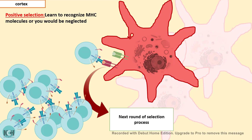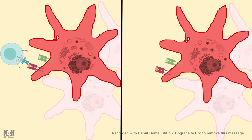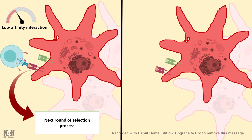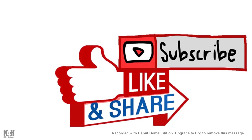If T cells cannot recognize MHC, they are of no use and it is better that they die. But the cells which recognize MHC — whether class I or class II — survive and go to the next screening process: negative selection. In negative selection, cells that interact with MHC-bound peptide antigens with moderate or low affinity proceed to the next round. However, if they interact with MHC-bound peptides with very high affinity, they are killed by apoptosis and undergo negative selection, removing potentially autoreactive T cells.